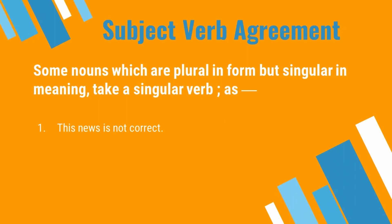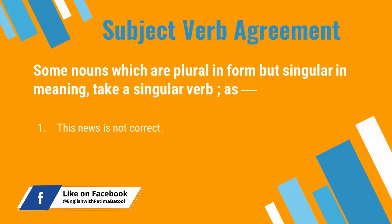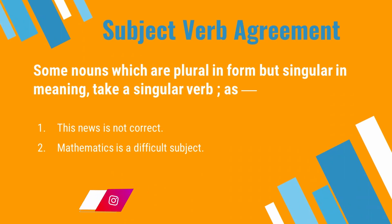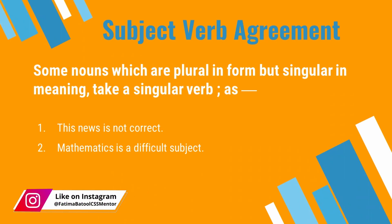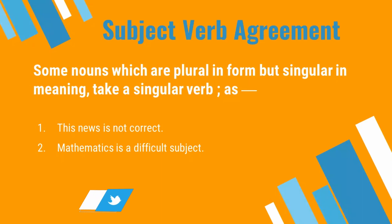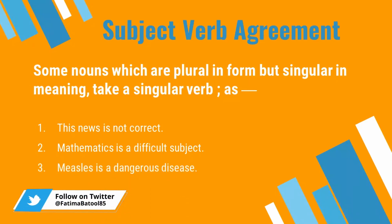Hamare paas kai lafz hain jo spelling mein plural hain, dekhne mein plural hain, lekin unke maani singular hain. Aaj jo hum rule parh rahe hain woh isi cheez ke baare mein hai: some nouns which are plural in form but singular in meaning take a singular verb. Jaise: 'This news is not correct.' Mathematics is a difficult subject — mathematics mein S ka istemal hua hai lekin yeh ek singular noun hai. Measles is a dangerous disease — measles bhi plural in form but singular in meaning. The wages of sin is death.